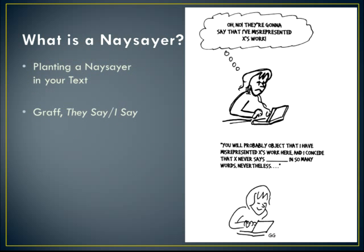This cartoon from Gerald Graff's book They Say, I Say nicely illustrates the idea of planting a naysayer in your writing. When you anticipate that your reader will have an objection, you can disarm the reader by stating an objection in your writing and then answering it convincingly.